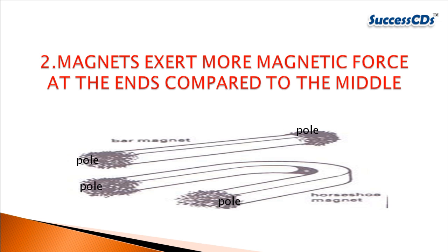Magnets exert more magnetic force at the ends as compared to the middle. Try rolling a bar magnet on a plate containing iron filings — you will find that more filings stick to the ends. The ends of a magnet show more magnetic force and are called the poles of a magnet.